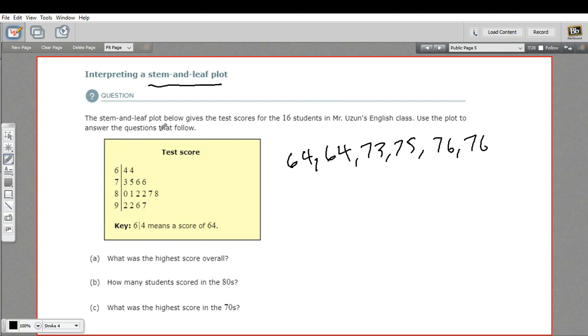Now, this says it shows the test scores for 16 students in an English class, and we're supposed to use this plot to find the answers. Before we do that, let's go ahead and just think about this. What does this stem-and-leaf plot show?